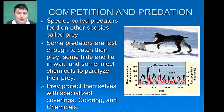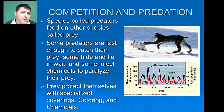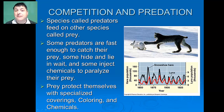Another common species interaction is that of the predator-prey interaction. Species called predators will feed upon other species called prey. Predators have to be adapted to catch their prey — some are fast enough to run after their prey, while others are ambush predators that hide and lie in wait. Some predators need to use toxins, chemicals to paralyze their prey. Prey have to equally be adapted for survival. Many prey species will be fast enough to escape their predator. Others might have camouflage, specialized coloring, so they blend into their background. Others may produce a chemical which they use in defense.